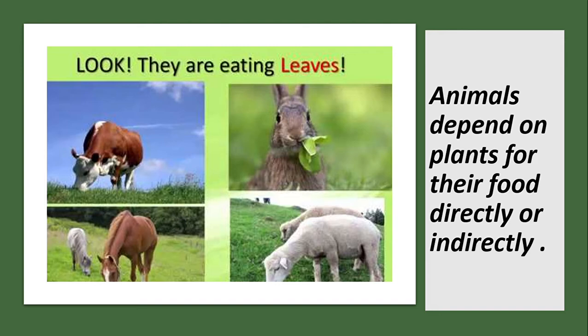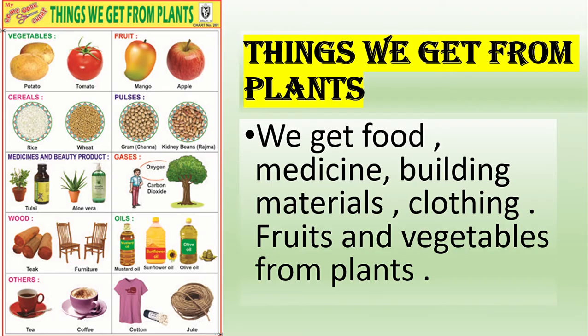We know that plants are useful to us in many ways. We get many things from plants. We get food from plants — for example, cereals, rice, seeds, and pulses. Many medicines are also made from plants, and these plants are called medicinal plants.